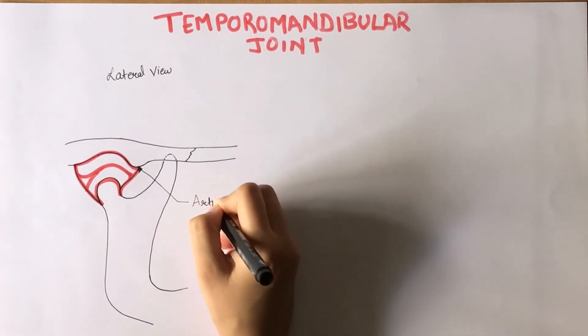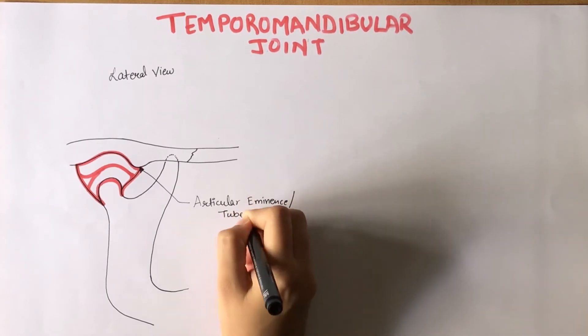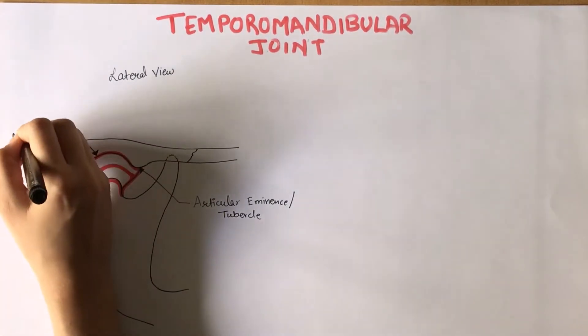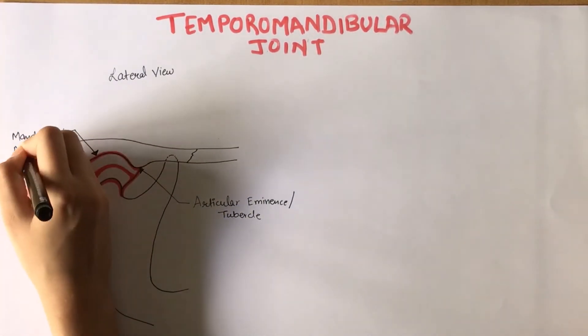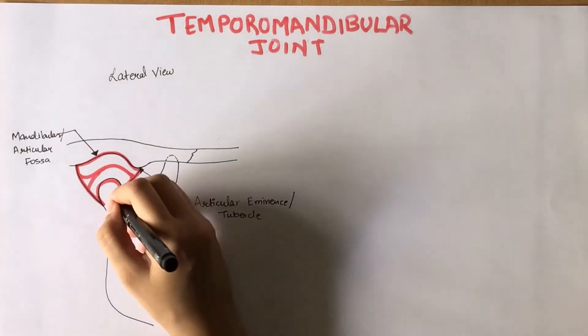The surfaces that articulate to form the temporomandibular joint are the articular eminence, also known as articular tubercle, mandibular fossa or the articular fossa, and the condyle of the mandible.